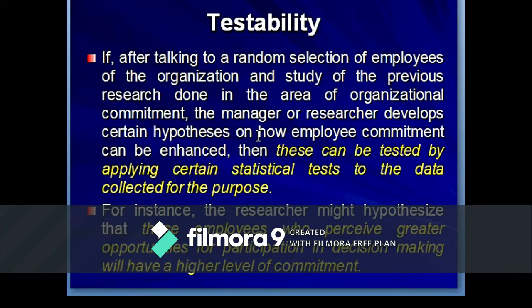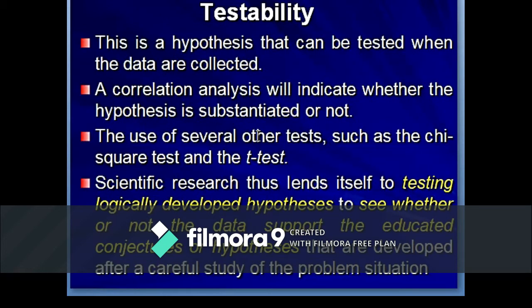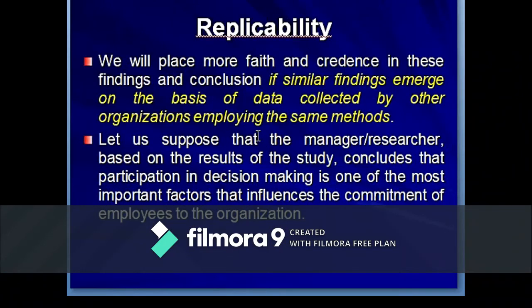For instance, the researcher might hypothesize that employees who perceive greater opportunities for participation in decision-making will have a higher level of commitment. This is a hypothesis that can be tested — when the data are collected, a correlation analysis will indicate whether the hypothesis is substantiated or not. The use of other tests such as the chi-square test and t-test depends upon the distribution of the data.